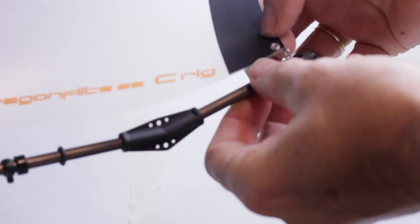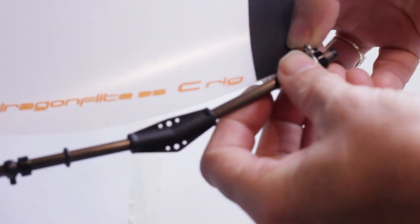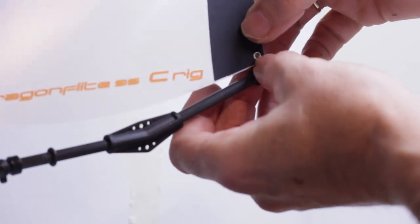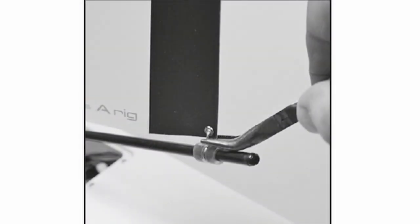Place the clew hook into the eyelet on the mainsail. Close up the clew hook with a pair of pliers. This will prevent an accidental release when sailing.